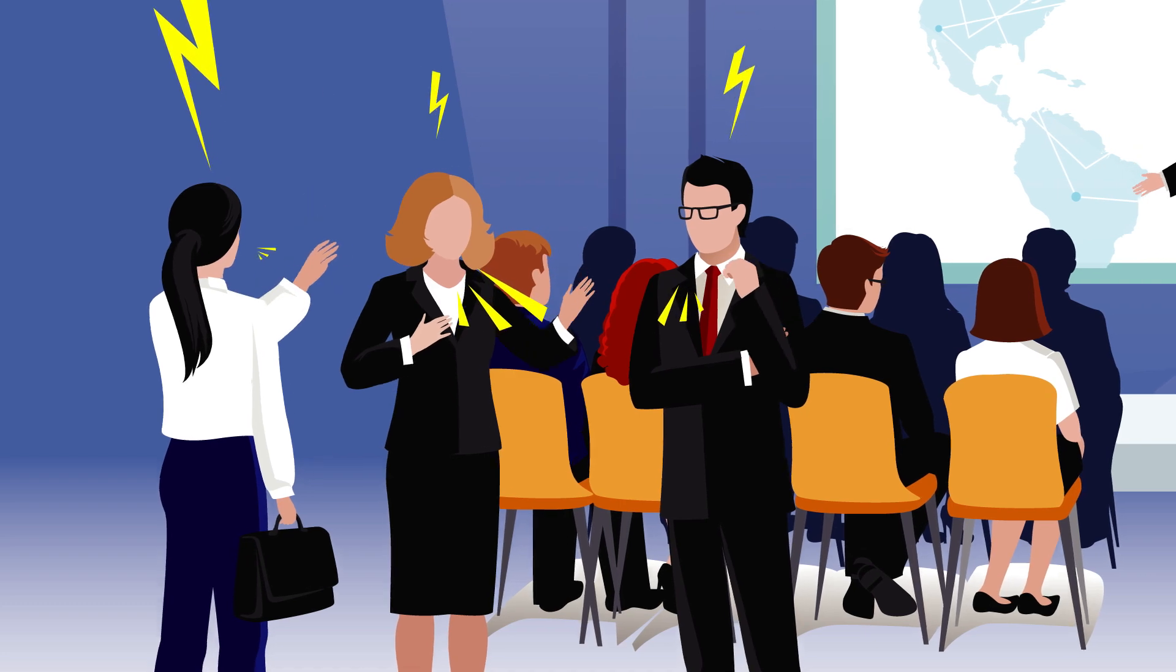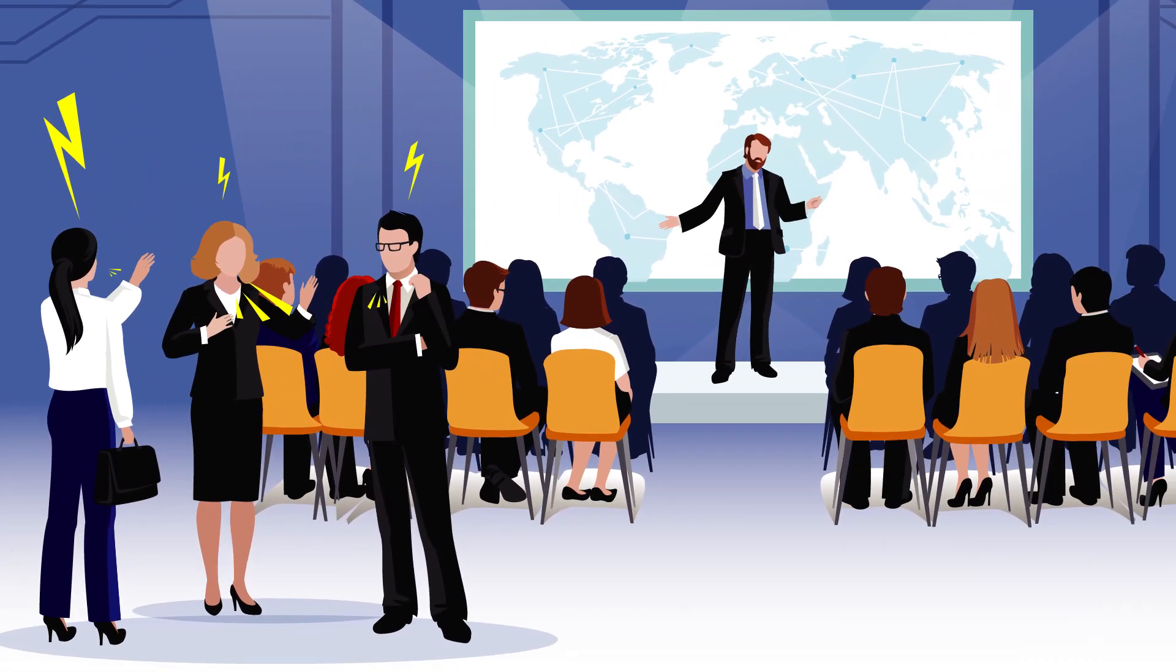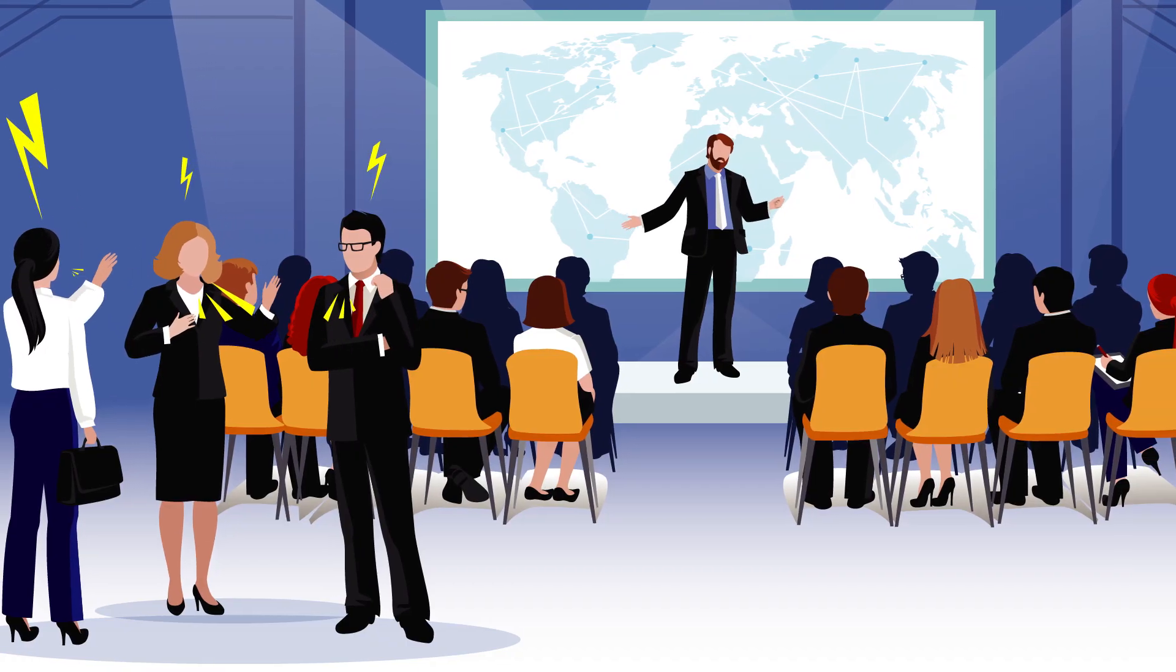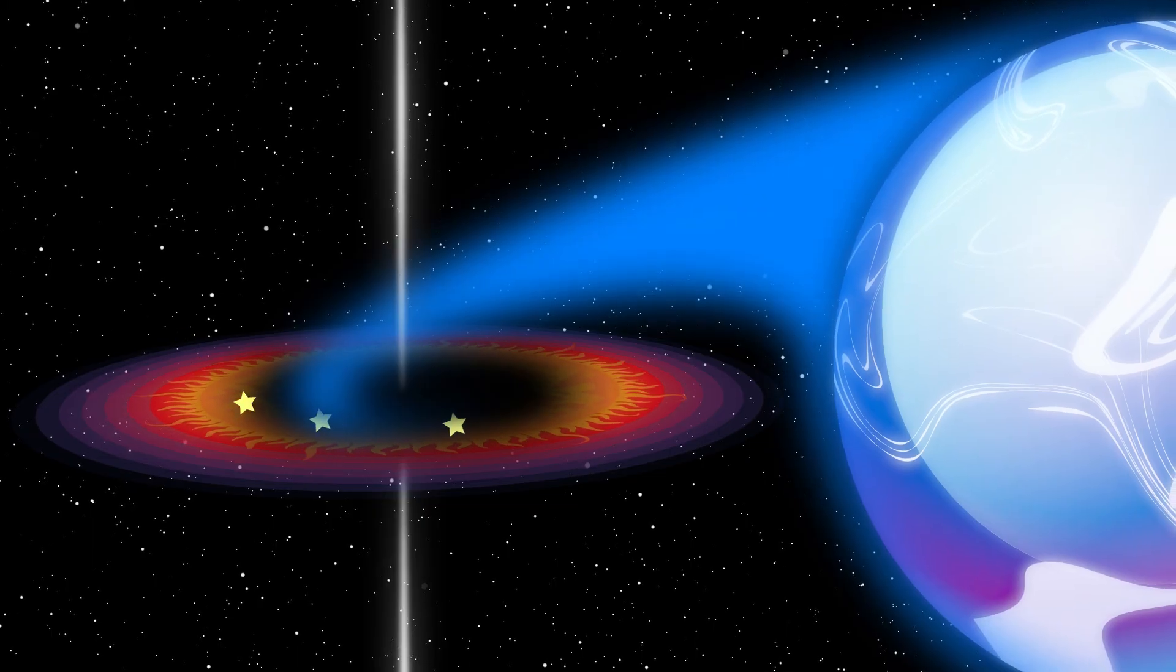If you're surprised by the fact that scientists can't agree on an explanation for an event that we can clearly see with our own eyes, you may be wondering what else we don't know about space. Well, it turns out there's plenty we don't know. Take for example black holes.